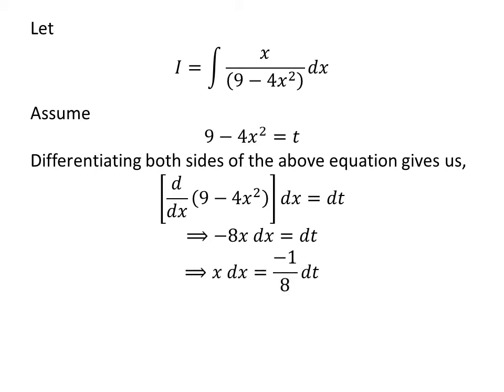Shifting minus 8 to the right-hand side in the above equation gives us x dx equals minus 1 upon 8 times dt.